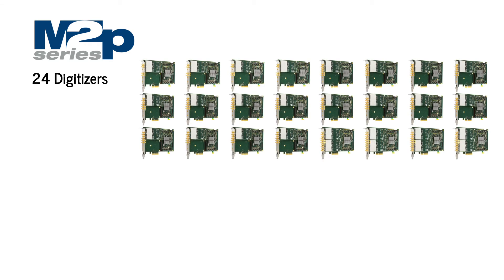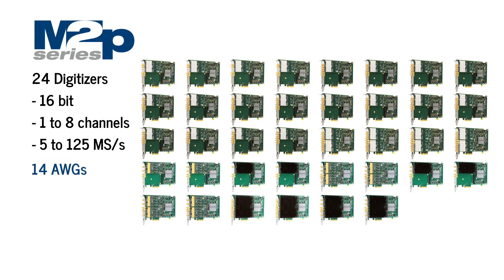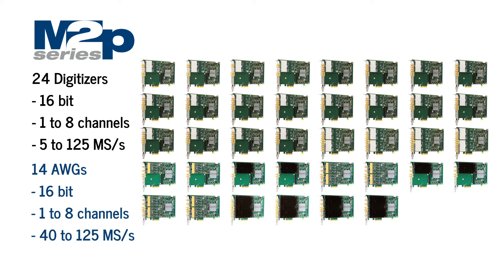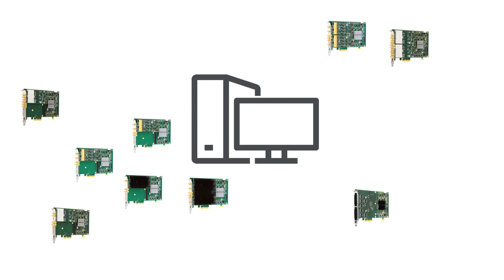The whole M2P family consists of 24 different digitizer cards, all 16-bit with 1 to 8 channels per card and sampling rates from 5 to 125 mega samples per second, and 14 different AWGs — arbitrary waveform generators — also with 16-bit resolution and 1 to 8 channels per card and output rates of 40 to 125 mega samples per second. Any 16 cards of this M2P family can be synchronized in one PC.